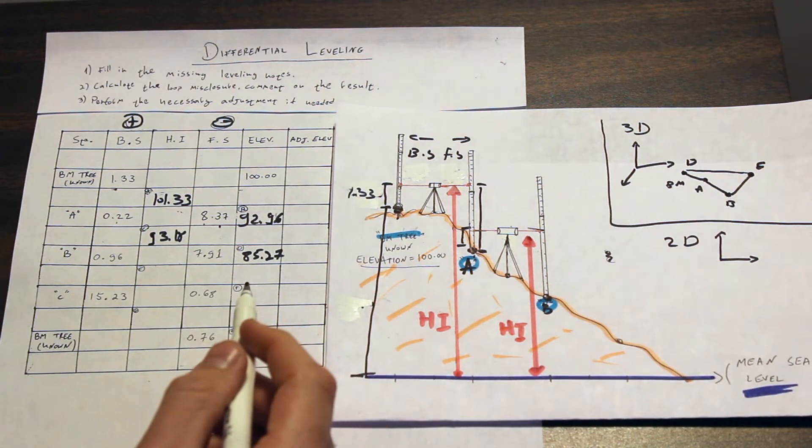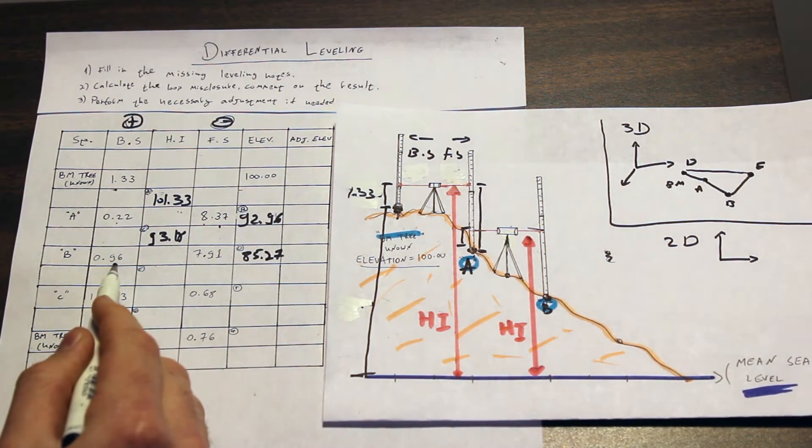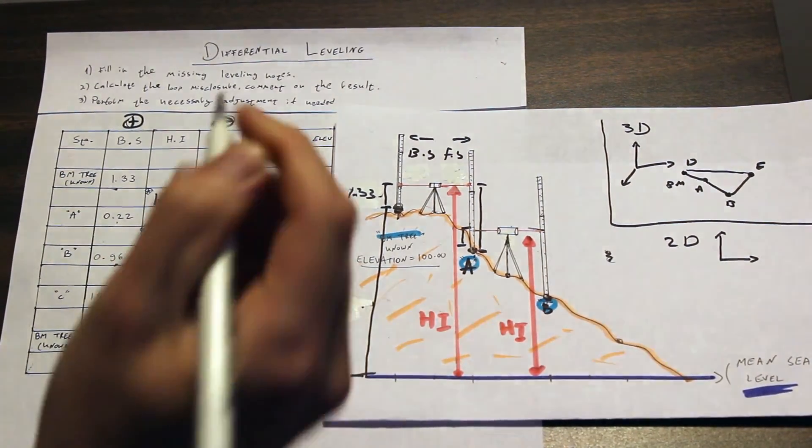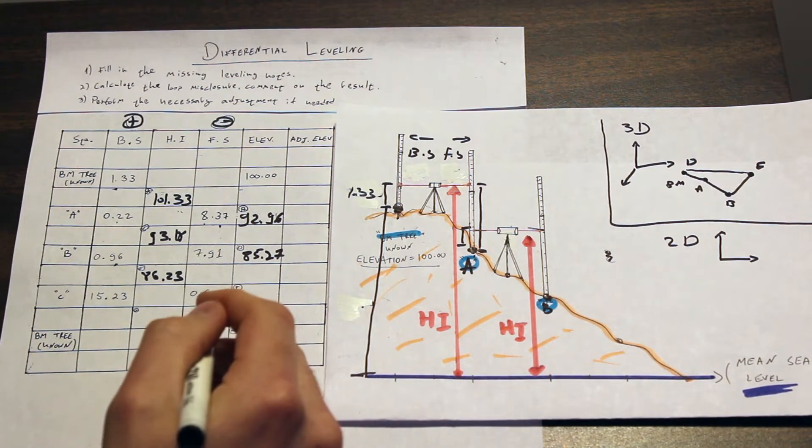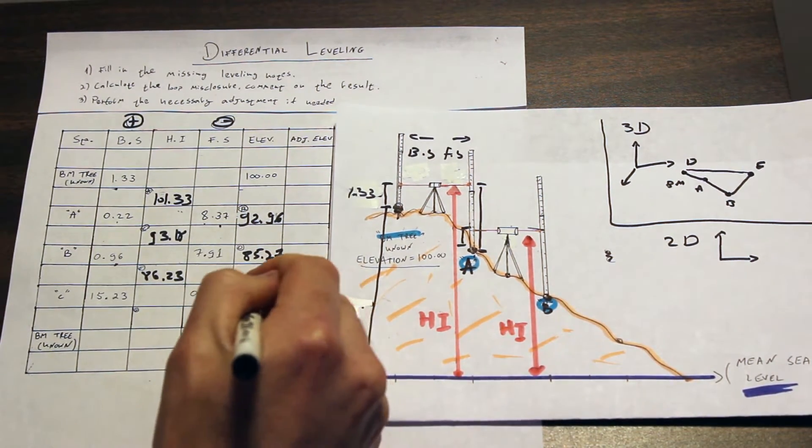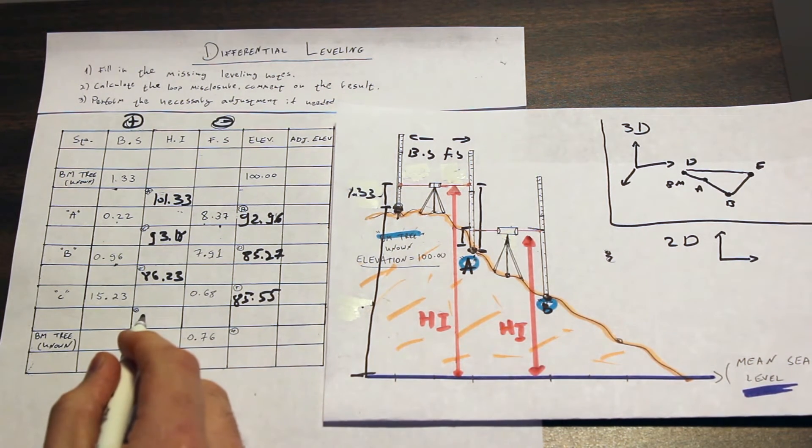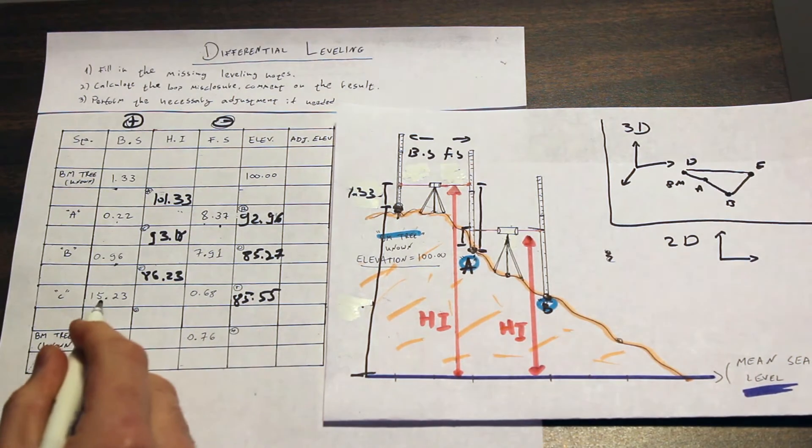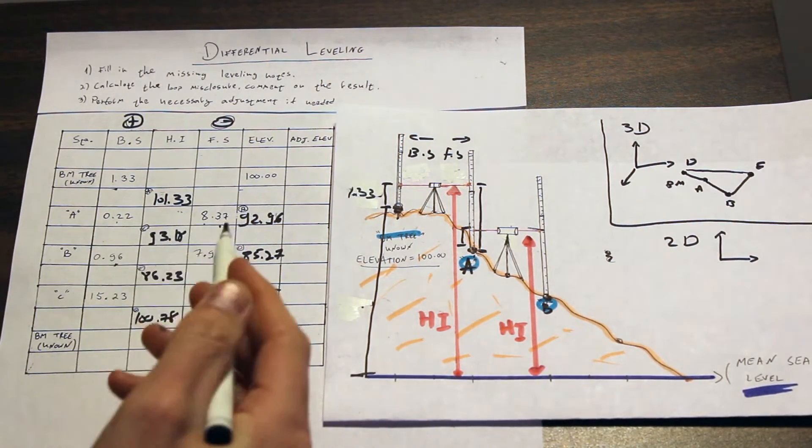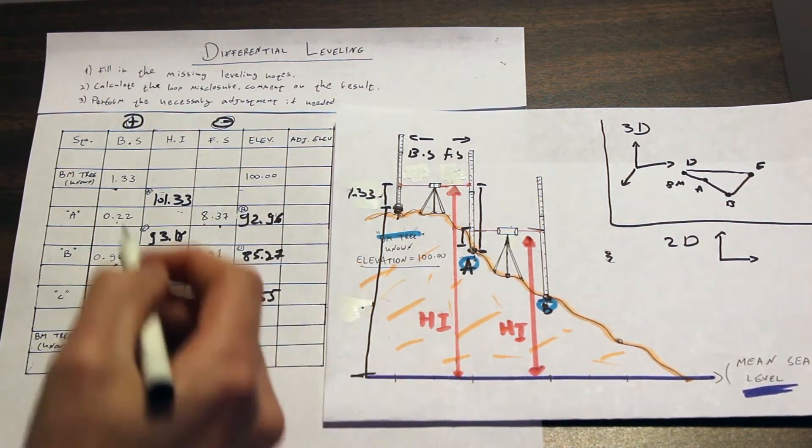Okay, moving on. I guess you got the point by now, so we can just continue filling the charts. So 85.27 plus 0.96 gives us 86.23, and deducting 0.68 from that number gives us 85.55. Moving on, our next height of the instrument is 85.55 plus 15.23, which gives us 100.78. So as you can see, it's always the same thing: here we add, here we deduct, we get the elevation, get the new height of the instrument, add, deduct, and move on.